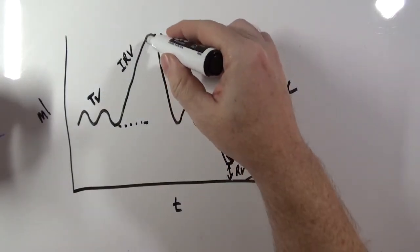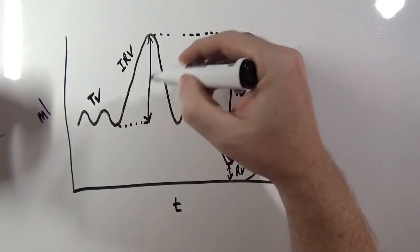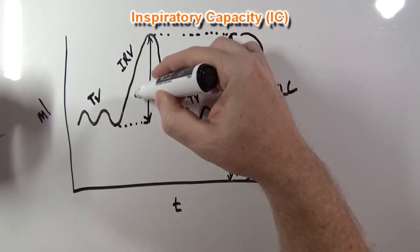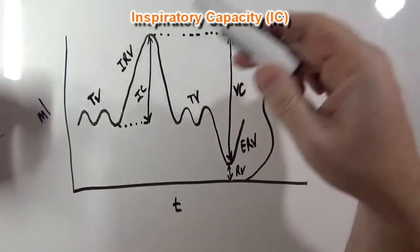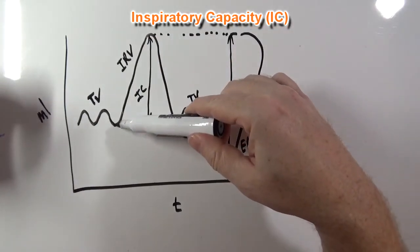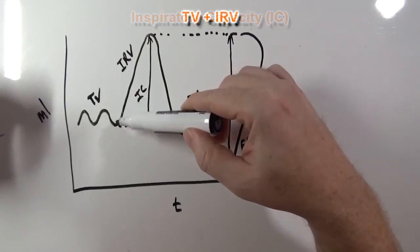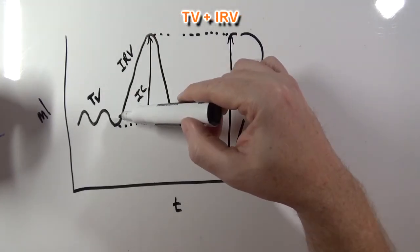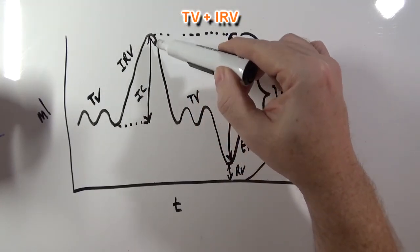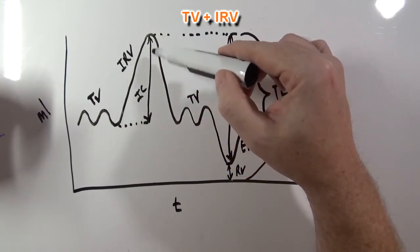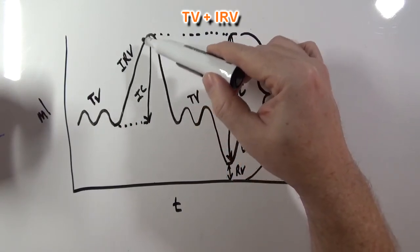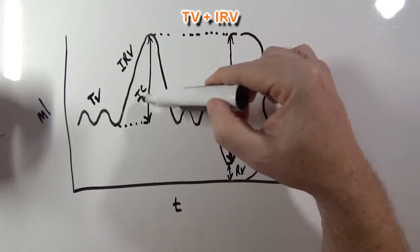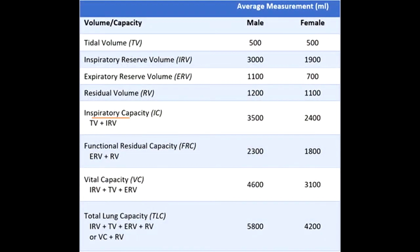This capacity here would be inspiratory capacity. You take the volume of air breathed in with a normal tidal volume breath and add the inspiratory reserve volume — the maximum air breathed in after a normal tidal breath — and together those give you inspiratory capacity. The average inspiratory capacity for a male is 3500 milliliters, and for a female is 2400 milliliters.